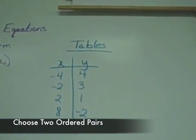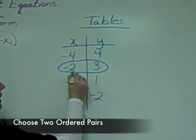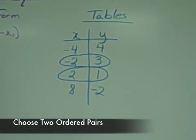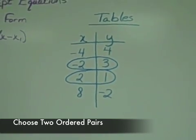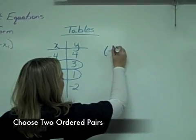So in this table, I'm going to choose the ordered pairs negative two, three, and two, one. It doesn't matter which ordered pairs you choose when you write your linear equation from a table. I'm going to write these as ordered pairs.